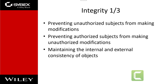The second principle of the CIA triad is integrity — the concept of protecting the reliability and correctness of data. Integrity protection prevents unauthorized alterations of data and ensures that data remains correct, unaltered, and preserved. Properly implemented integrity protection provides a means for authorized changes while protecting against malicious unauthorized activities such as viruses and intrusions, as well as mistakes made by authorized users.